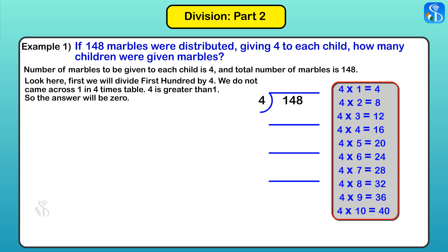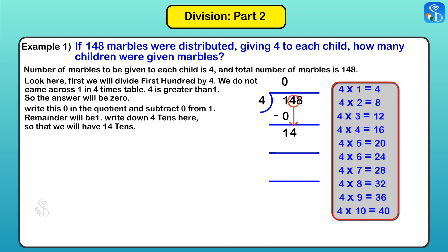So the number will be 0. Let us write the 0 in the quotient and subtract 0 from 1. Remainder will be 1. Now we will write down 4 tens here, so that we have 14 tens.